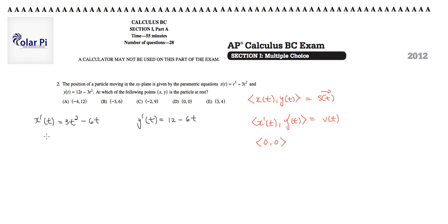Setting both of these equal to zero, we get that zero will have to equal, factoring also, I can factor 3t times t minus 2 here, and then here I'm going to get zero is equal to 12 minus 6t, so 12 equals 6t, which means that t equals 2.